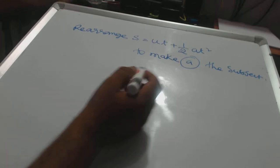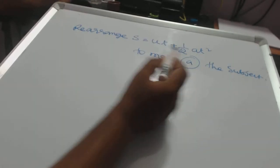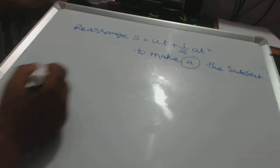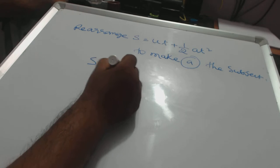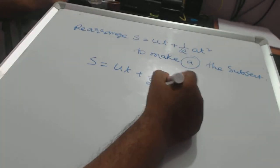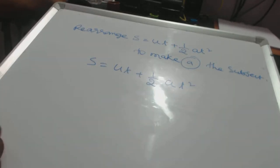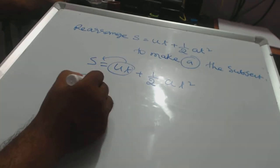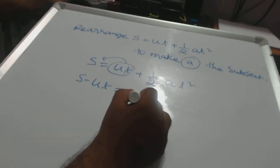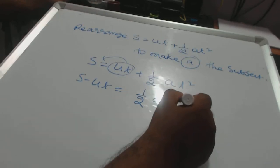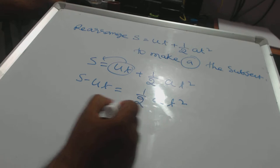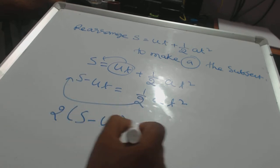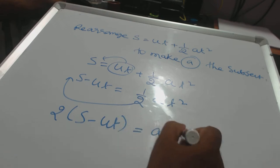Now we are going to discuss how to make a the subject of the formula. First, we'll take s equals ut plus half a t squared. Bring ut to the left side, which is equal to minus ut. So we have s minus ut equals one-half a t squared. Division becomes multiplication, so 2 times s minus ut equals a t squared.